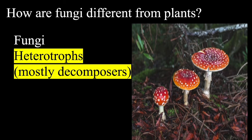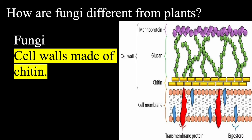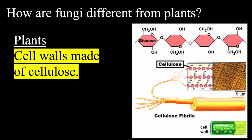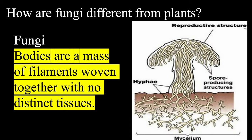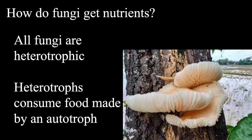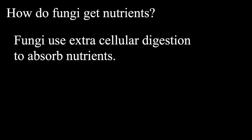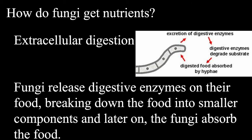Now let's look at how the fungi kingdom is different from the plant kingdom. First, fungi are heterotrophs, whereas plants are autotrophic — meaning plants take in carbon dioxide and water and rely on the sun's energy to create glucose and oxygen. As we've seen earlier, fungal cell walls are made of chitin, whereas plant cell walls are made of cellulose. Plants also have special tissues for transportation of water and nutrients, known as xylem and phloem, whereas fungi bodies are a mass of filaments woven together with no distinct tissues. All fungi are heterotrophic, meaning they consume food made by an autotroph. Fungi use what's known as extracellular digestion to absorb nutrients — they break down food molecules outside of the cell with the help of enzymes, release those digestive enzymes on their food to break it into smaller components, and then absorb it.